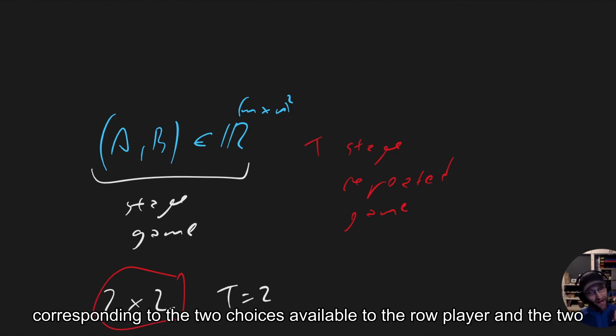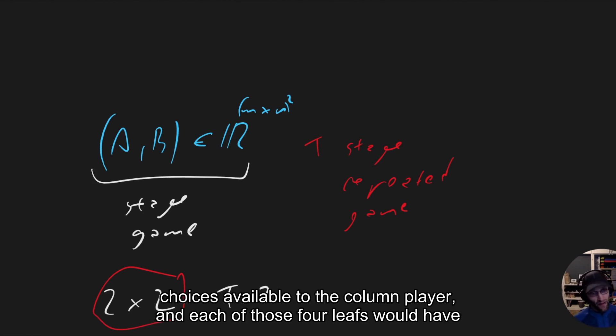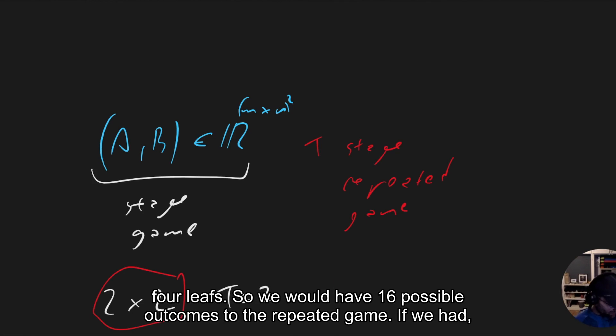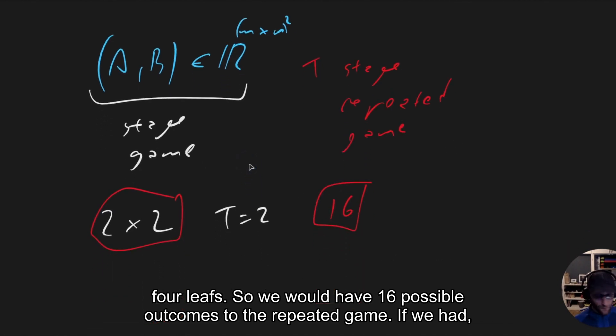This corresponds to the two choices available to the row player and the two choices available to the column player. And each of those four leaves would have four leaves. So we would have 16 possible outcomes to the repeated game.